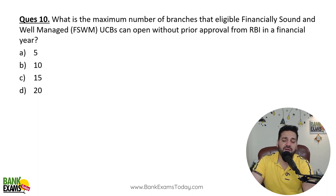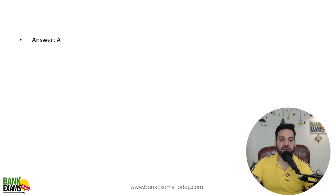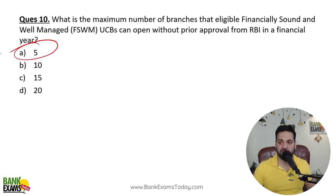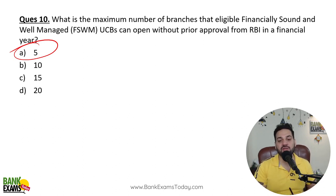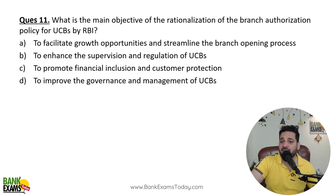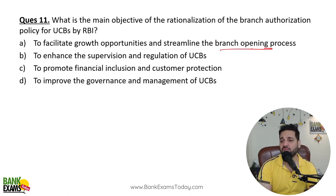What is the maximum number of branches that eligible financially sound and well-managed urban cooperative banks can open without prior approval of RBI in a financial year? A maximum of five branches can be opened in a financial year under the general permission route. The main objective of rationalization of branch authorization for urban cooperative banks is to provide growth opportunities and streamline the bank branch opening process.